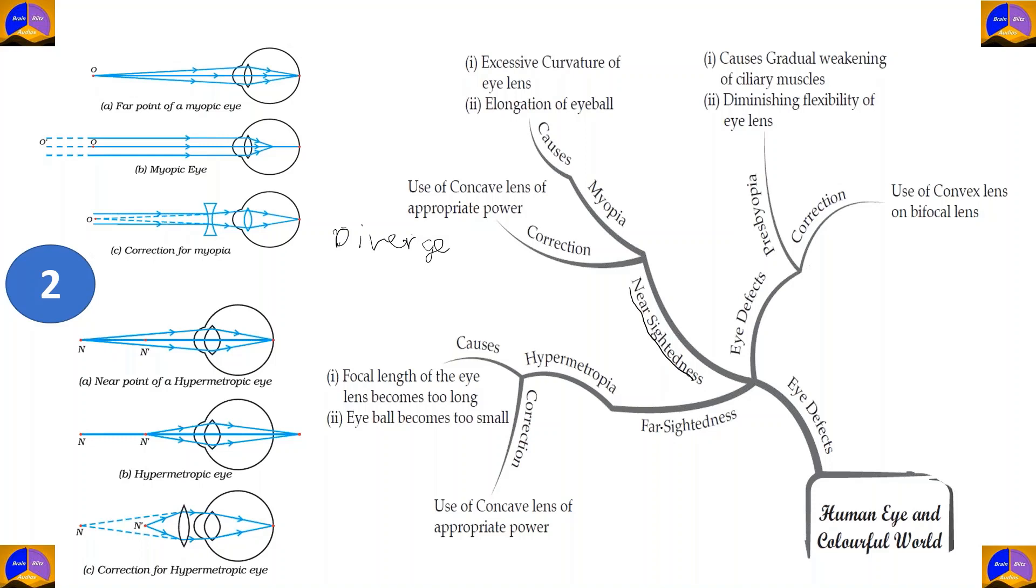Now, nearsightedness is when we see things that are near to us, but we can't see what's far. Suppose the problem is the exact opposite. What if you can see stuff far away, but you can't see stuff near to you? This is known as farsightedness or hypermetropia. In the diagrams shown, we can see that the normal near point for the human lens, which usually is 25 centimeters from the eye, has now gone farther than that, thus making it difficult for us to see nearby objects.